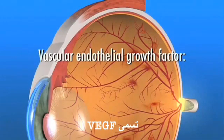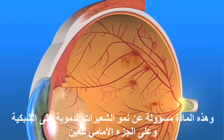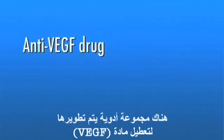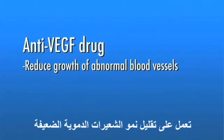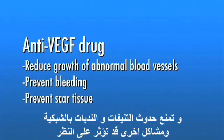This chemical, called vascular endothelial growth factor, or VEGF, is critical in causing abnormal blood vessel growth on the surface of the retina as well as in other parts of the eye. Several drugs have been developed that can block the trouble-causing VEGF. An anti-VEGF drug can help reduce the growth of abnormal blood vessels, which helps to prevent bleeding, scar tissue, and other problems that can cause vision loss.